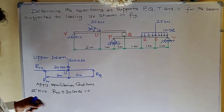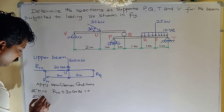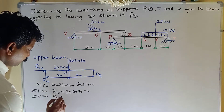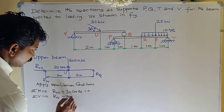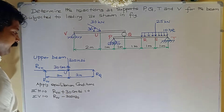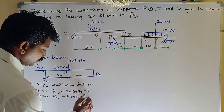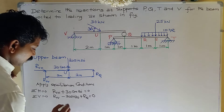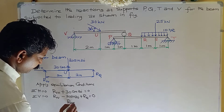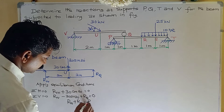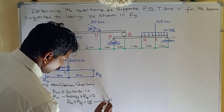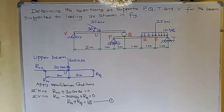Second condition: σV = 0. RVV is in the upward direction (positive), minus 30 sin 30°, plus RQ equals 0. Therefore, RVV plus RQ equals 30 sin 30°, which equals 50. So RVV + RQ = 50. Take this as equation 1.